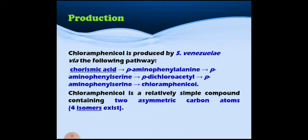Chloramphenicol is produced from Streptomyces venezuelae. The biosynthetic pathway, as shown in the diagram, proceeds from chorismic acid to chloramphenicol. It leads to formation of aminophenyl alanine, then aminophenyl serine, which leads to formation of the dichloroacetyl group, then aminophenyl serine, and finally chloramphenicol.